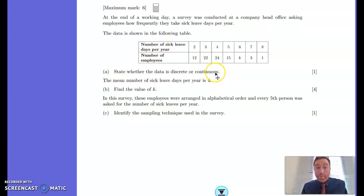And we want to know if this data is discrete or continuous. Well, it can only take specific values, 2, 3, 4, 5. It's not measured, so I couldn't have 2.77 sick days per year. So because we are only looking for specific values, that is discrete data.